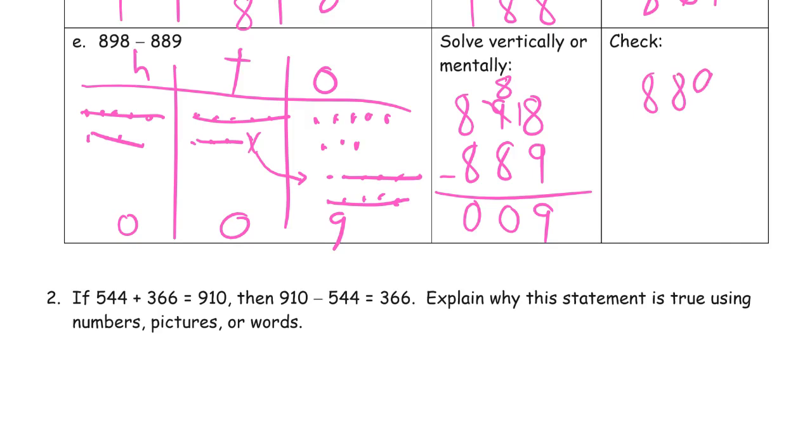And then we have 889 plus 9. 9 plus 9 is 18, got to compose a 10. And then our tens, 8 plus the 10 we composed is 9 tens. And the 800.